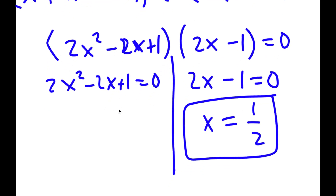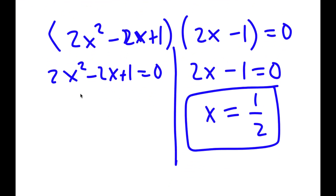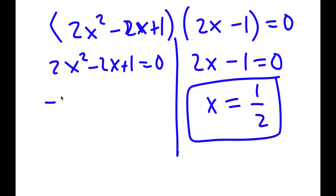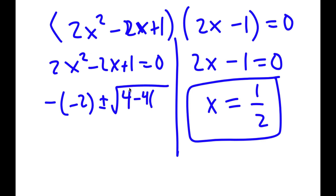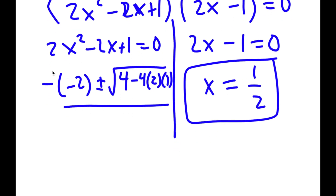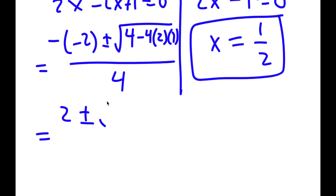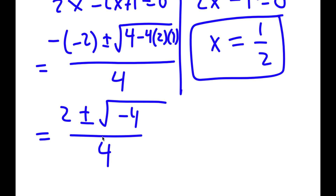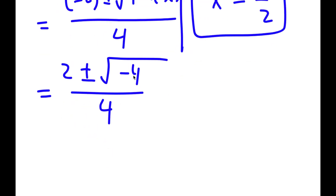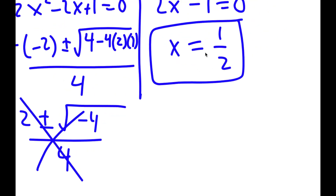For 2x squared minus 2x plus 1 equals 0, using the quadratic formula: negative b is positive 2, plus or minus the square root of b squared — which is 4 — minus 4 times a times c, which is 4 times 2 times 1 equals 8, giving 4 minus 8 equals negative 4, all over 2a which is 4. Since we have the square root of a negative number, there are no real solutions. So the only solution is x equals 1 half.